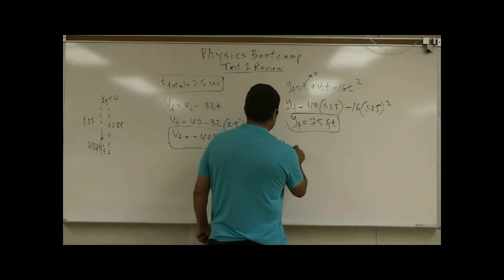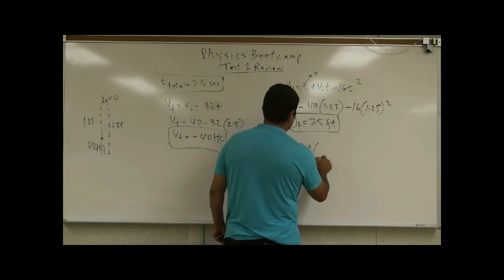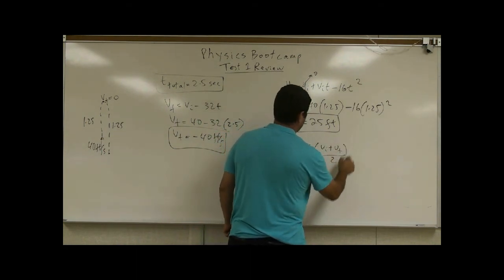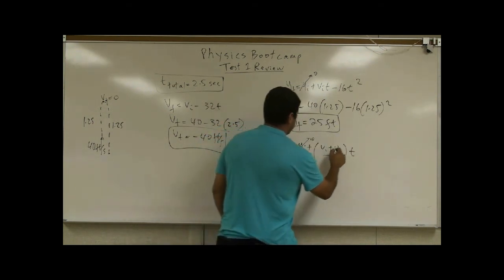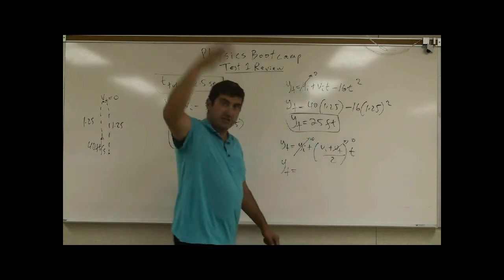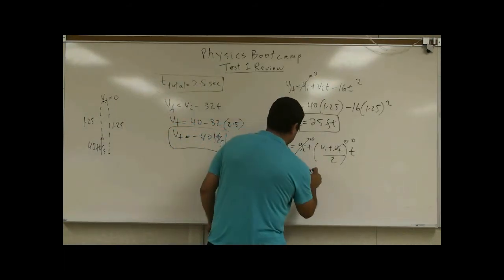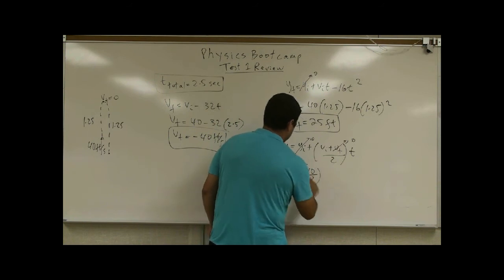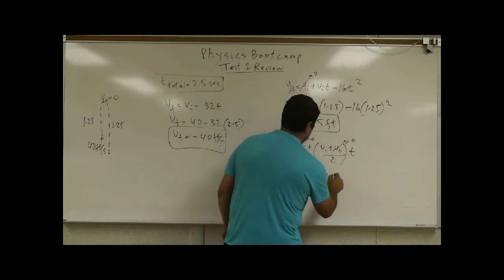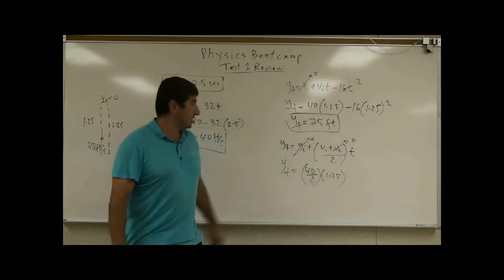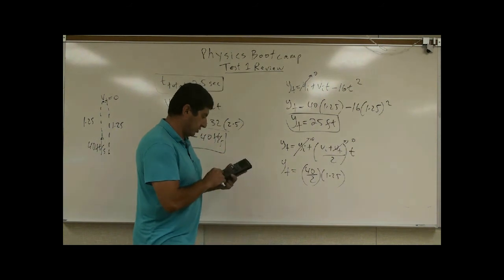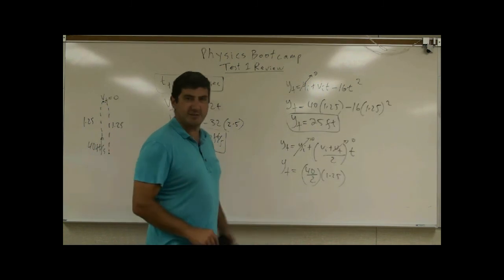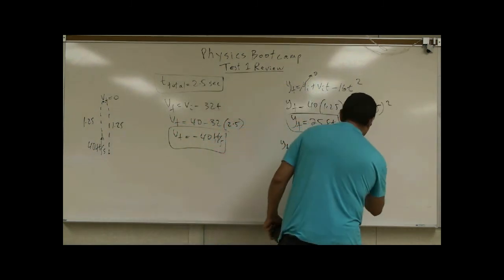What other equation can I use? Well, I could again use Y final is equal to Y initial plus V initial plus V final over two T. Y initial is 0. V final is 0. Why? Because we're at the top. The final velocity is 0. V initial is 40. The time to go up is 1 and a quarter. And it does give you a much easier way of getting it than this. So that's going to be 20 times 1.25, exactly the same. 25 feet.